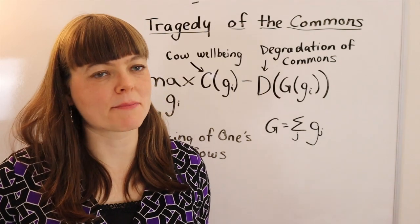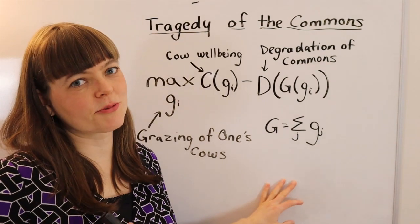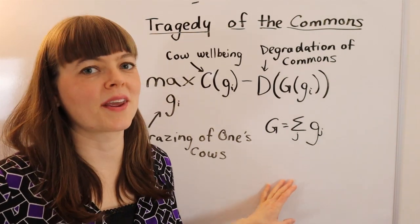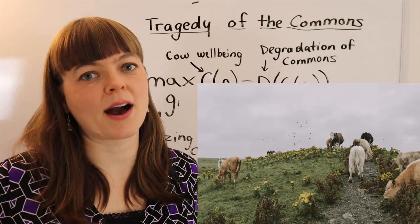I want to show you a microeconomic model of the tragedy of the commons. This model goes right along with the classic story where you have some town with a common area for people to graze their cows.